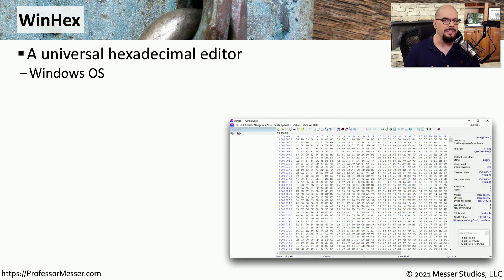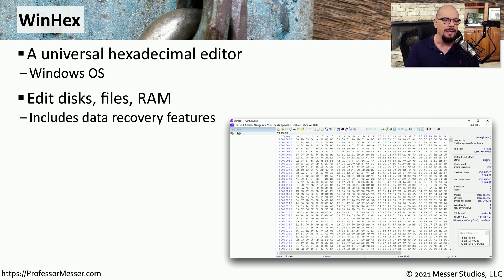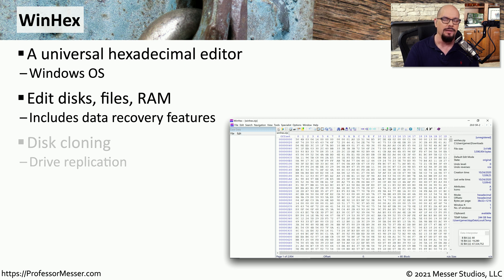Once you have some of these images or memory dumps, you may want to look through a raw representation of those files. One easy way to do this in Windows is with the WinHex utility. This is a third-party editor that allows you to view information in hexadecimal mode, so you can pull out information that's located in a file, in memory, in disks that you may have, and be able to not only view but edit that information as well.